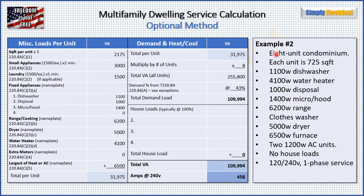Starting with square footage: 725 square feet per unit multiplied by three gives us 2,175 VA. We add two small appliance circuits for 3,000 VA, and a laundry circuit for 1,500 VA. Fixed appliances include a dishwasher, disposal, and micro hood at their listed values. Range at 6,200 watts. Dryer at 5,000 watts. Water heater at 4,100 watts. The largest of heating and cooling is the furnace at 6,500 watts.